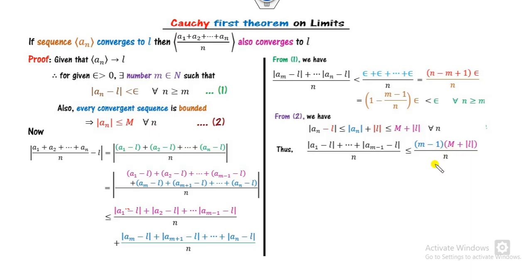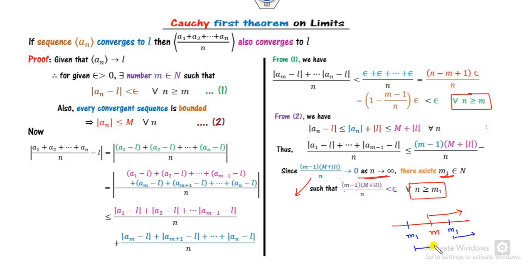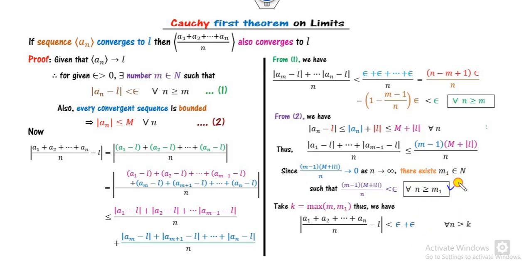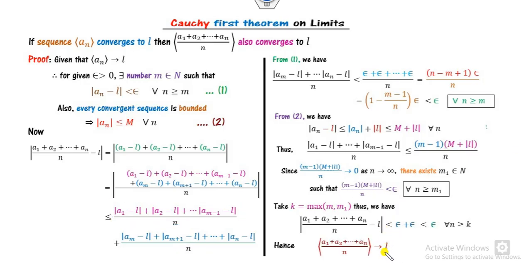Since this expression goes to 0 as n approaches infinity, there exists a positive natural number m_1 such that it becomes less than epsilon by the definition of convergence. We then take k as the maximum of m_1 and m and substitute into both parts. The first part is less than epsilon, the second part is also less than epsilon, and so epsilon + epsilon gives a bound less than epsilon overall. Hence the sequence converges, completing the proof of Cauchy's first theorem.